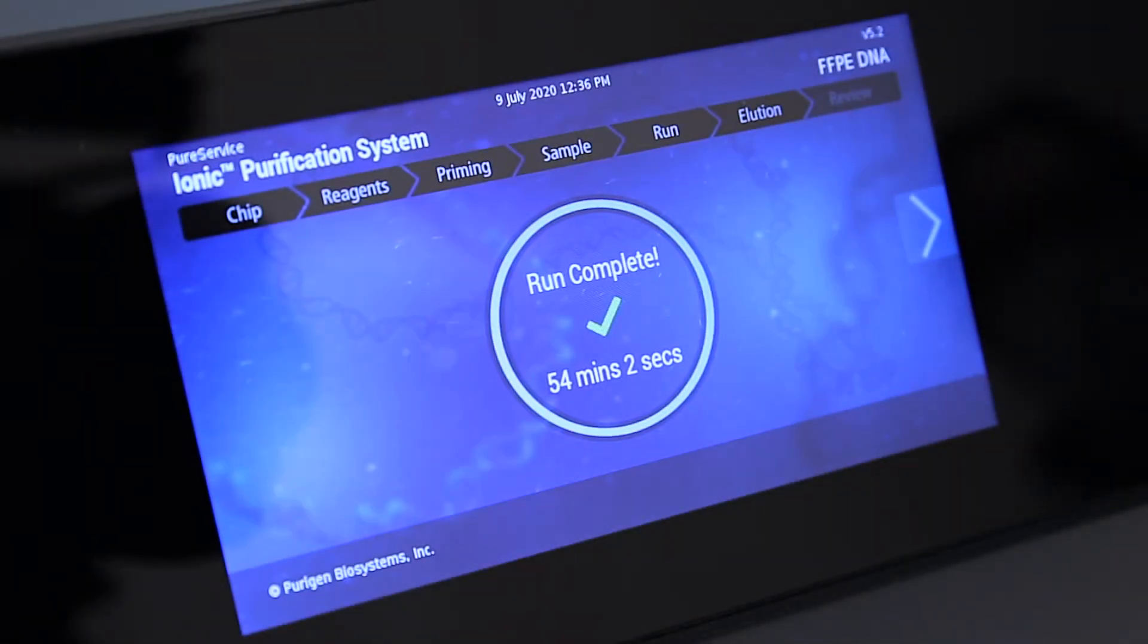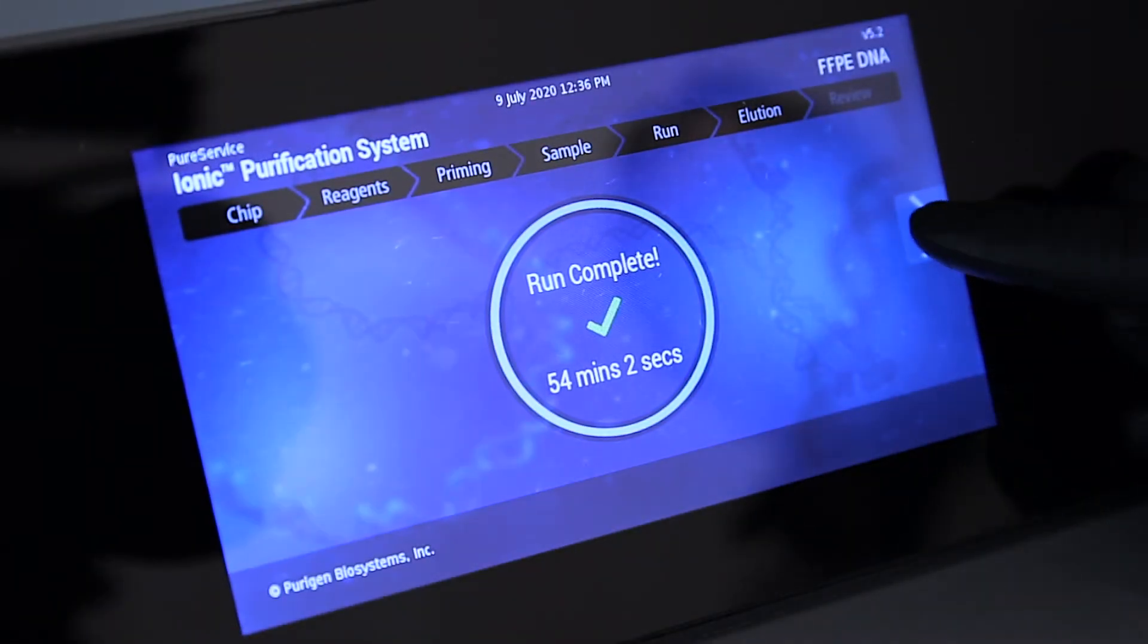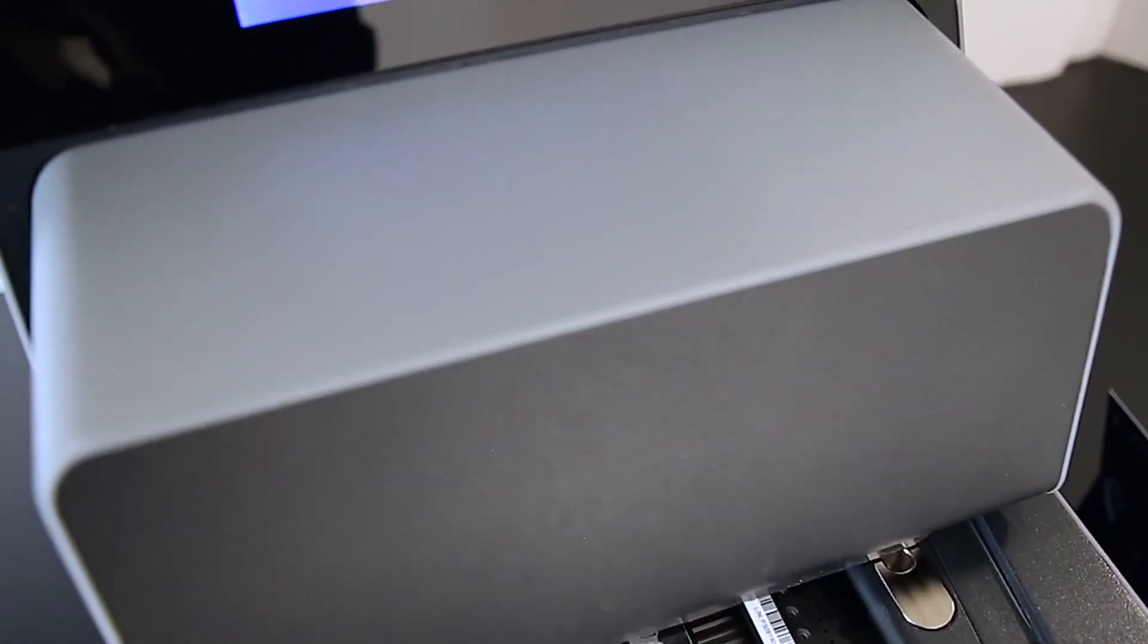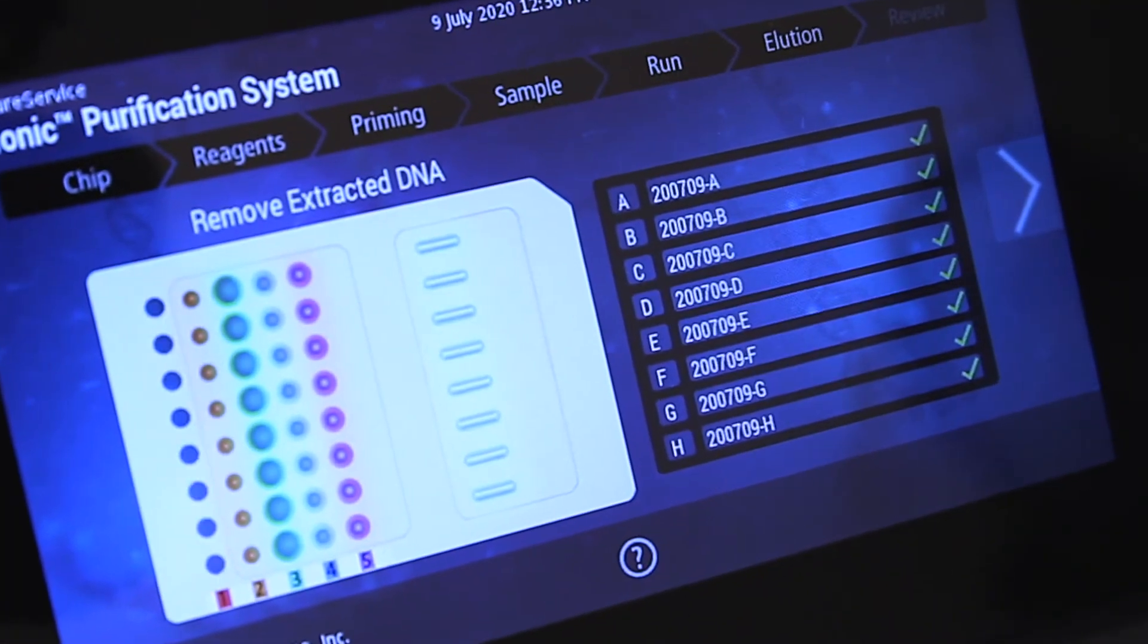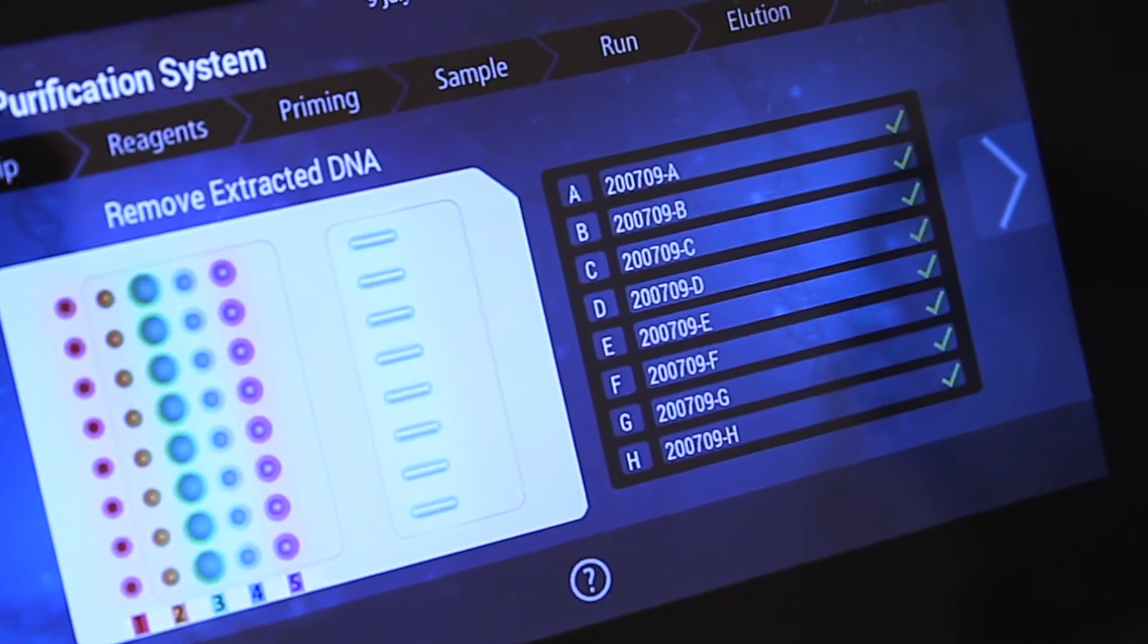Now that the run is complete, the extracted and purified DNA from each sample can be collected from the fluidic chip. Results on the screen indicate any errors that may have occurred during the run.